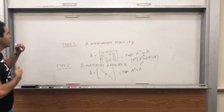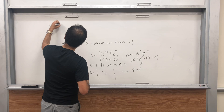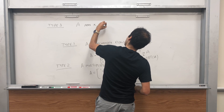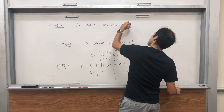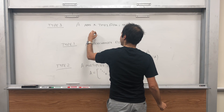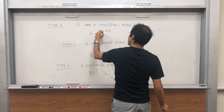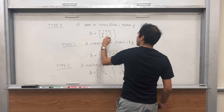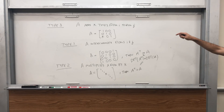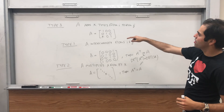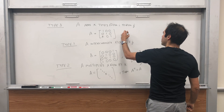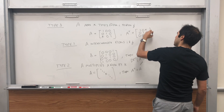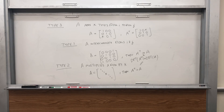The trickiest one is type 3. A adds K times row i to row j. Let me give an example: if you add K times row 1 to row 3, it looks like the identity except you add K on the (3,1) entry. But then A transpose still looks like the identity, except that K is in the transposed position.